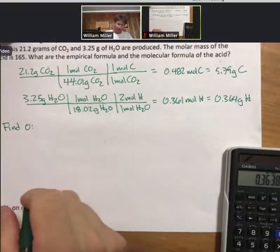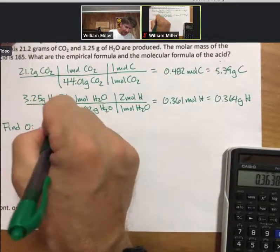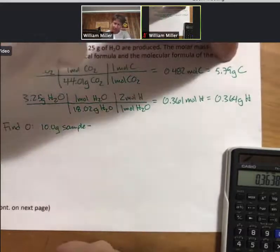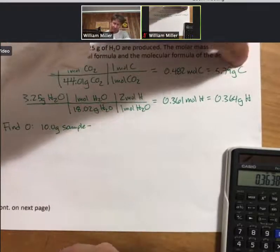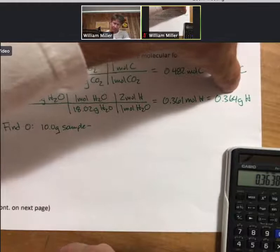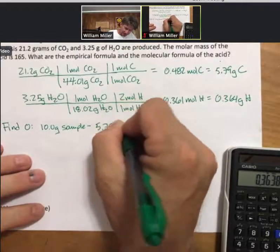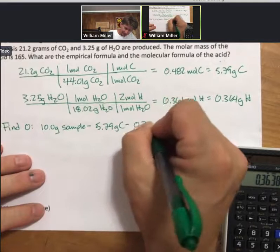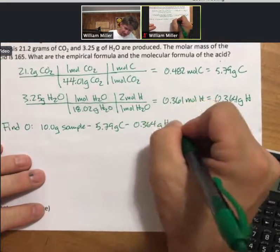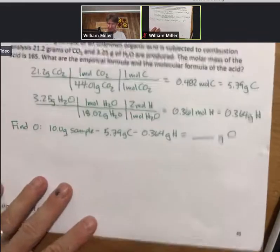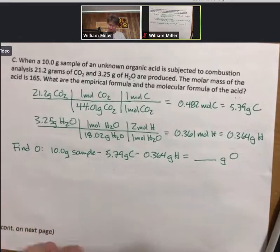Find oxygen by subtraction. We have 10 grams of sample minus our 5.79 grams of carbon and minus our 0.364 grams of hydrogen. And when I do that subtraction, I will be left with grams of oxygen.